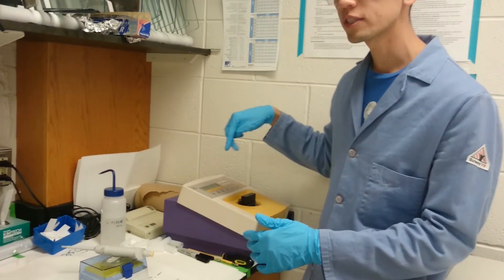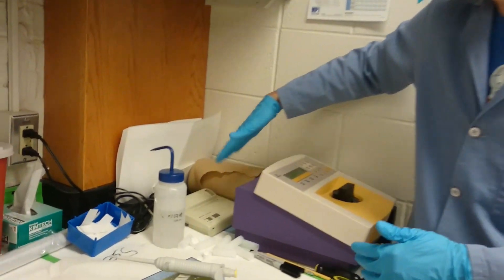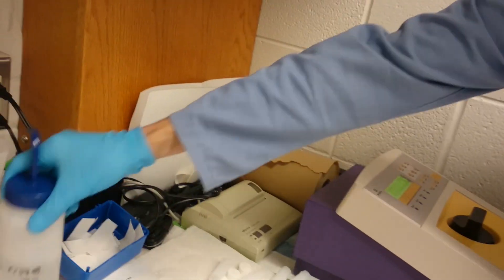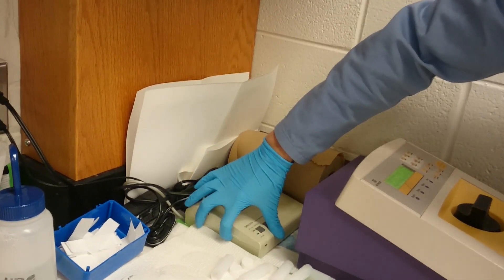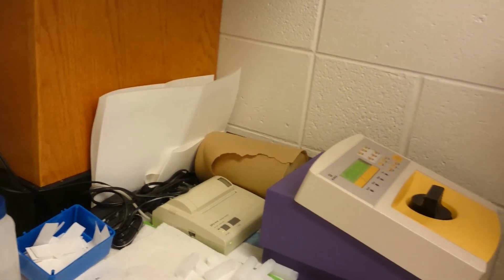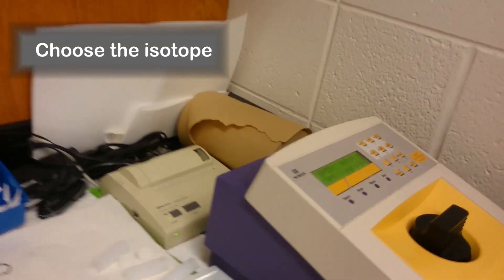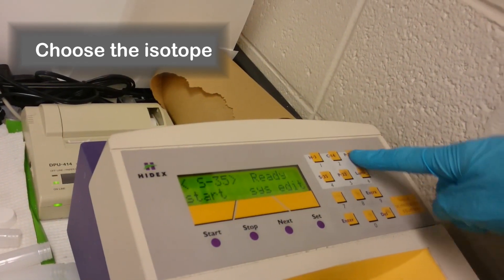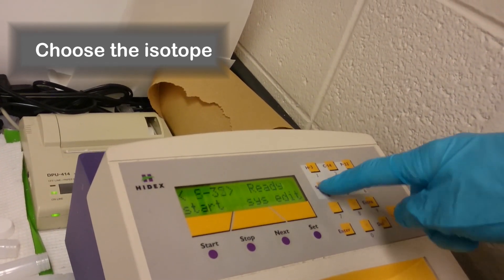There are two power switches for this one. The scintillation counter itself is in the back on the right, and then there's a second power switch here for the printer. If it's not already on the isotope that you want, you just choose by pressing the correct button and it should switch back and forth.